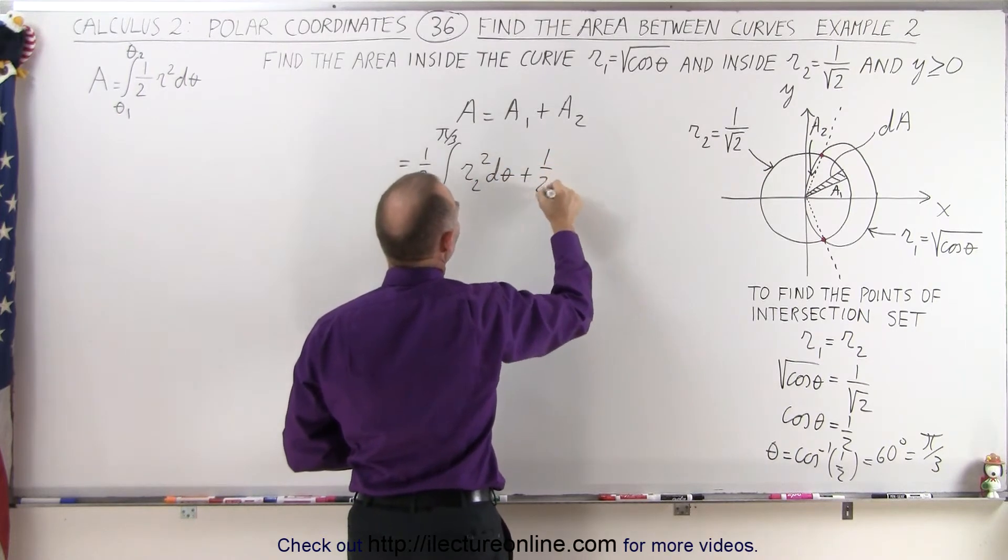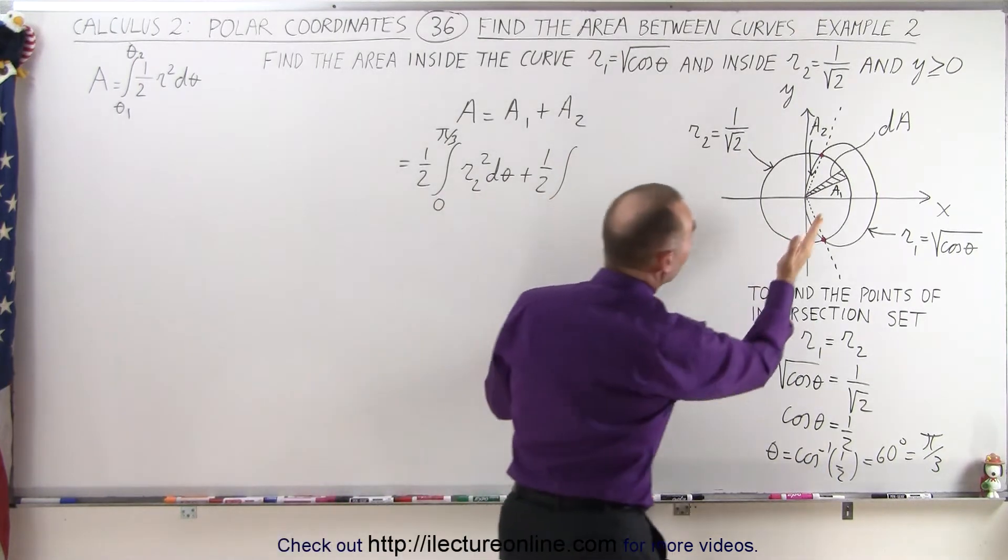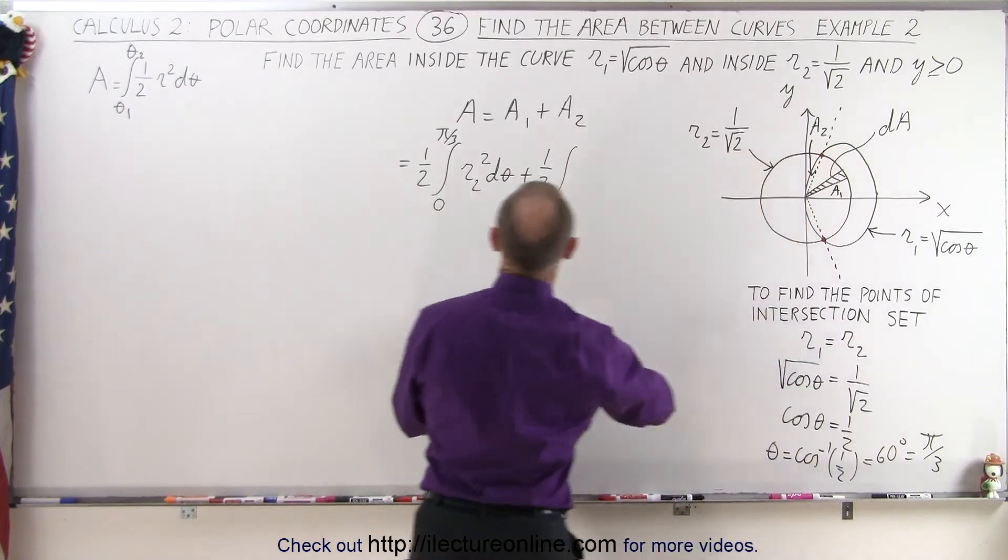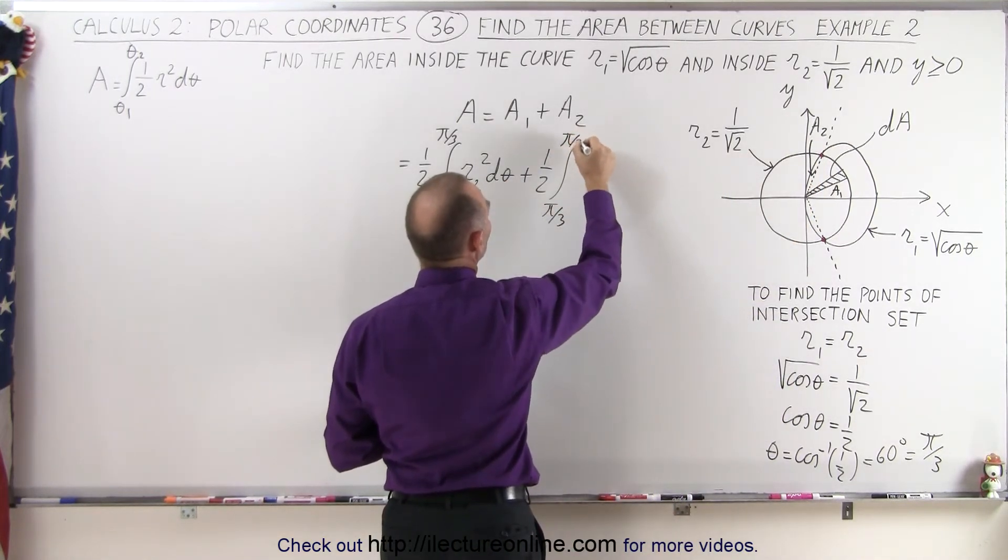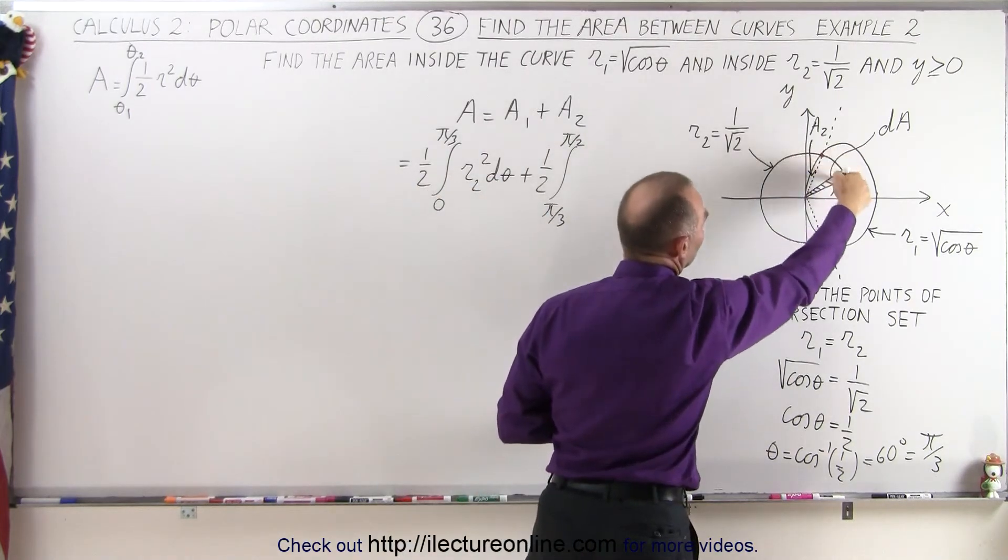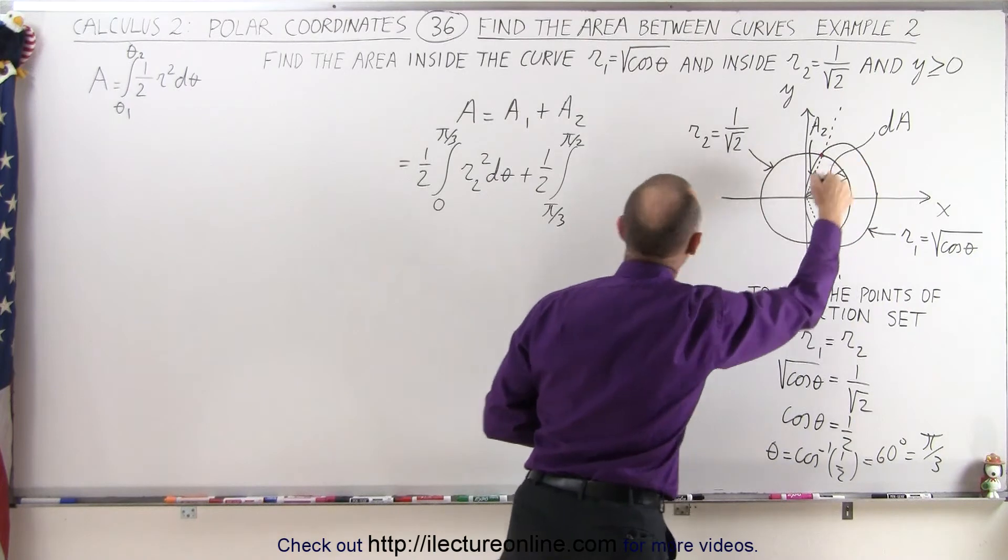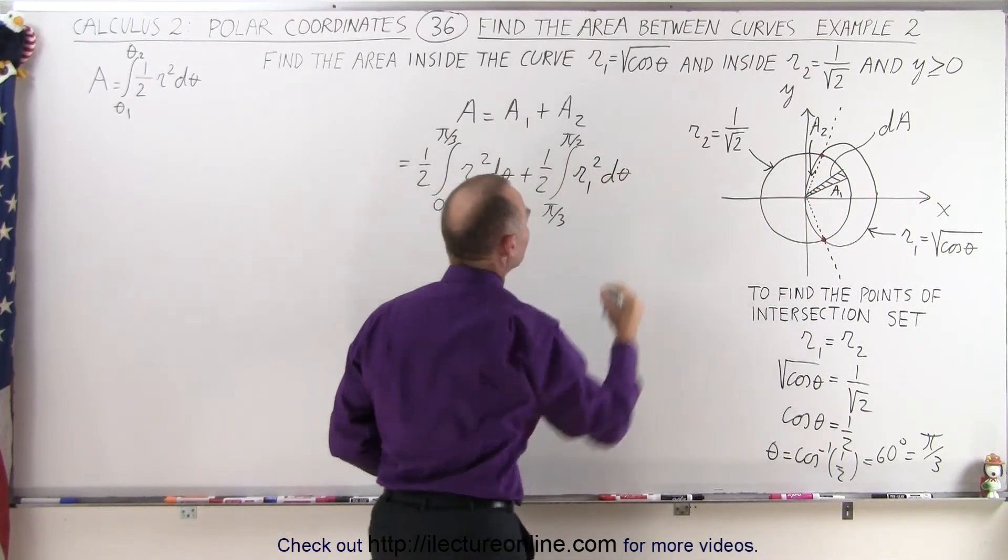Plus 1 half times the integral. Now the limits there, they're going to start from pi over 3, and they're going to end when we're vertical, which means pi over 2. So the limits are going to be from pi over 3 to pi over 2. So we have R2 squared times d theta of the function that limits this portion of the area, which in this case is going to be the function R1. So we have R1 squared times d theta.